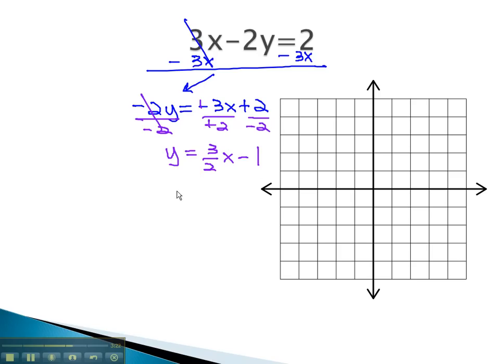Because slope-intercept form is y equals mx plus b, we can now easily and quickly identify m, the slope, is 3 halves, and b, the y-intercept, is negative 1.